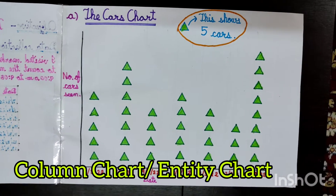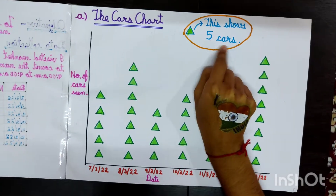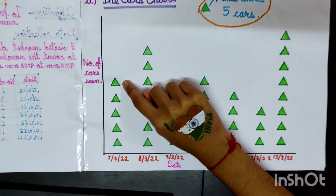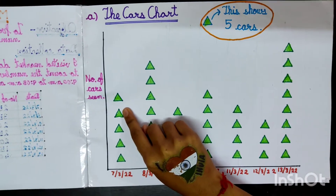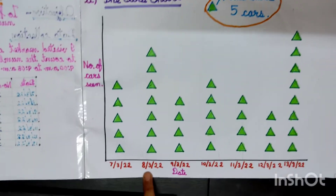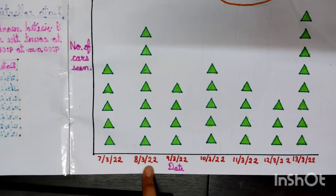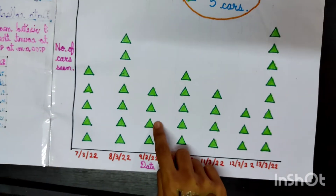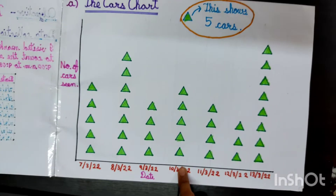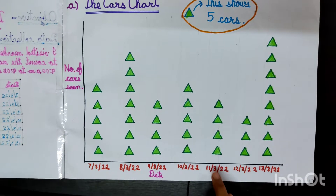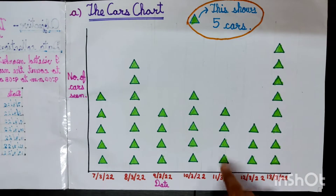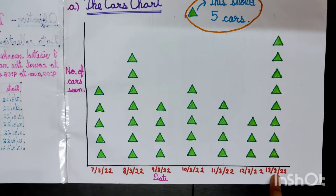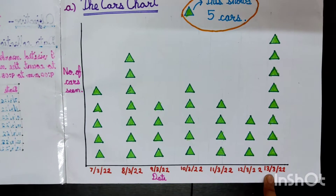My first Smart Chart is a Column Chart. One triangle represents 5 cars. So, if there are 5 triangles on 7 March 2022, then 5 x 5 equals 25 cars. On 8 March: 35 cars. On 9 March: 20 cars. On 10 March: 25 cars. On 11 March: 20 cars. On 12 March: 15 cars. And on 13 March: 40 cars.